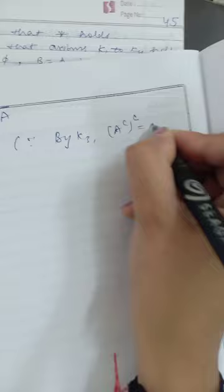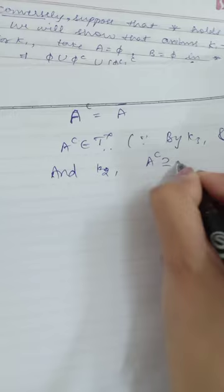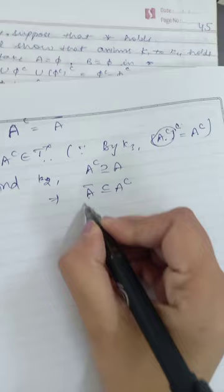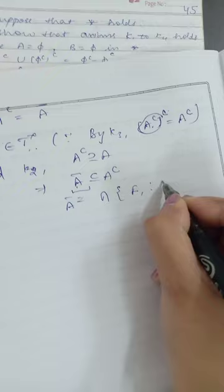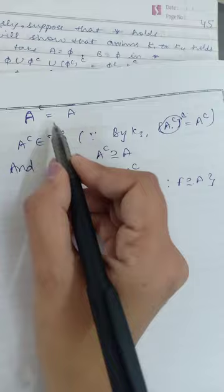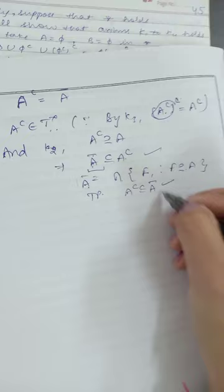By K3, the Kuratowski of A-Kuratowski equals A-Kuratowski, so A-Kuratowski belongs to T*. This means A-Kuratowski is a closed set with respect to topology T. By K2, A is a subset of A-Kuratowski, so A-Kuratowski is a closed set containing A. Since the T-closure of A is the intersection of all closed sets containing A, the T-closure of A is a subset of A-Kuratowski.